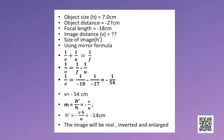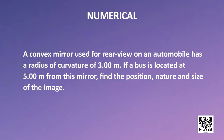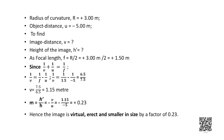Now let us move on to another numerical. A convex mirror used for rear view on an automobile has a radius of curvature of 3 metres. If a bus is located at 5 metres from this mirror, find the position, nature and size of the image. Here, a convex mirror is under consideration. Since its centre of curvature lies behind the mirror, the sign of radius of curvature will be positive. Therefore, radius of curvature R = +3 metres. Object distance is always negative, so object distance u = -5 metres.